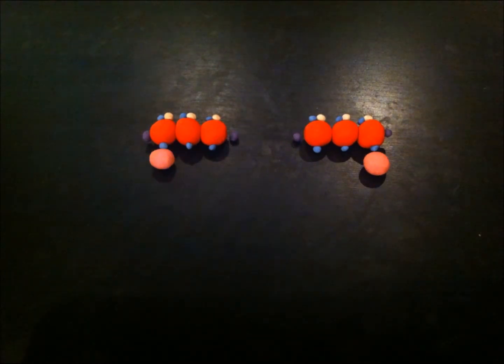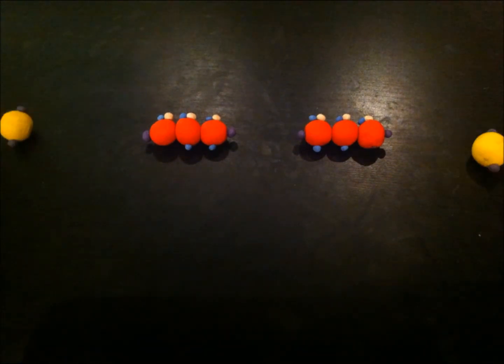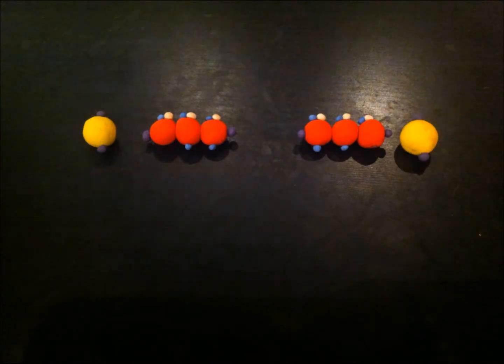The NADH are carried to the cristae for the electron transport chain. Two ADP molecules are converted into ATP through substrate level phosphorylation.